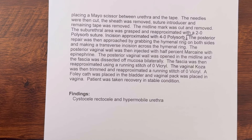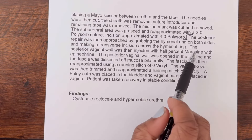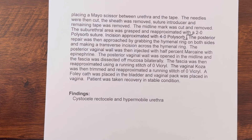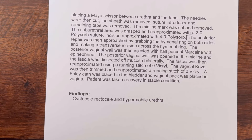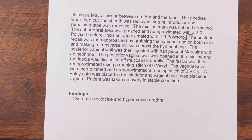Right here is where they finished the TVT. Now we are moving on to the posterior repair. The posterior vaginal wall was injected with half percent Marcaine with epinephrine, then opened in the midline and the fascia was dissected off the mucosa bilaterally. The fascia was then re-approximated using a running stitch of zero Vicryl. The vaginal mucosa was then trimmed and re-approximated with a running stitch of zero Vicryl. A Foley catheter was placed in the bladder and the vaginal pack was placed in the vagina. The patient was then taken to recovery in stable condition.